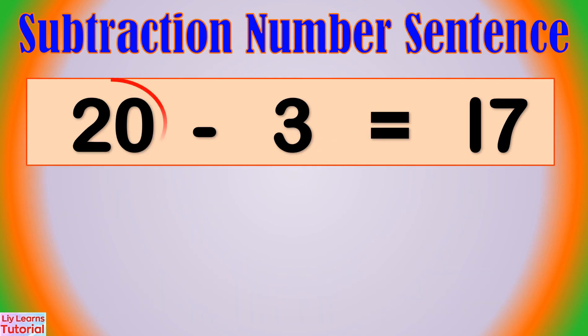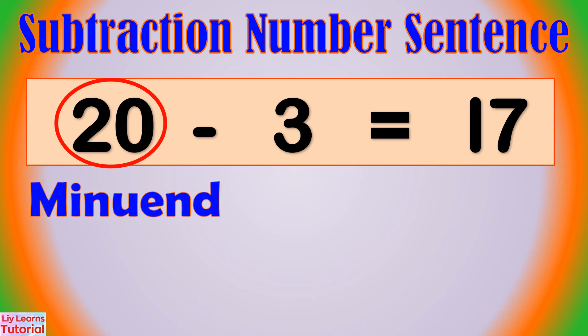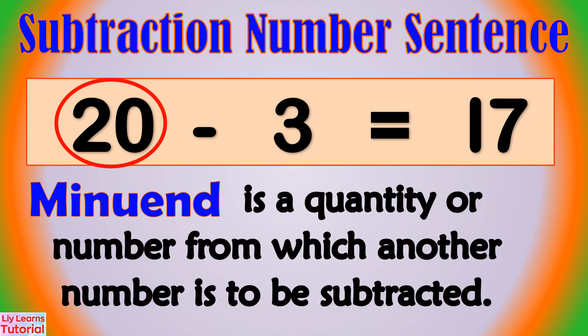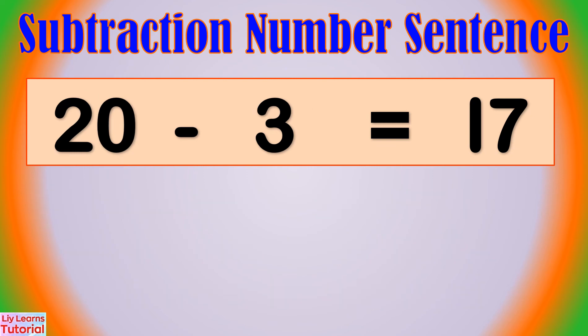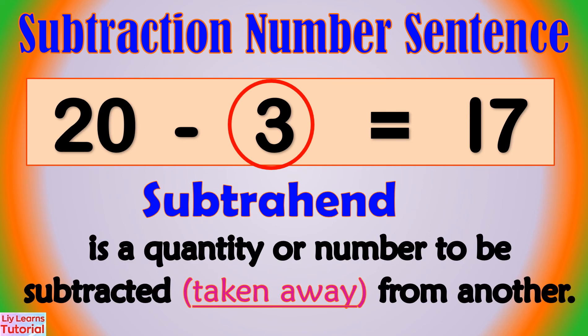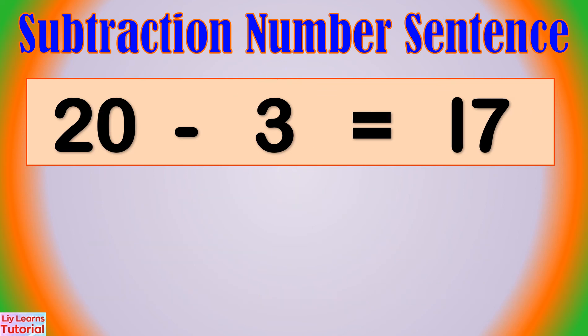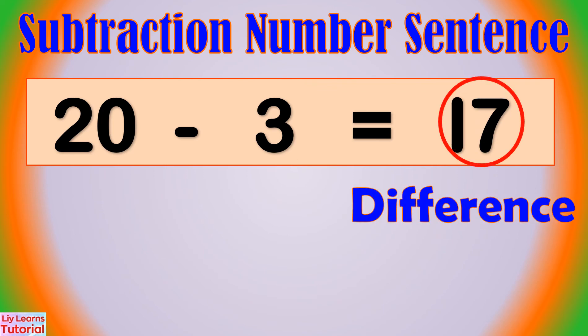This is the minuend. Minuend is a quantity or number from which another number is to be subtracted. Subtrahend is the quantity or number to be subtracted, taken away from another. The answer in subtraction is called difference.